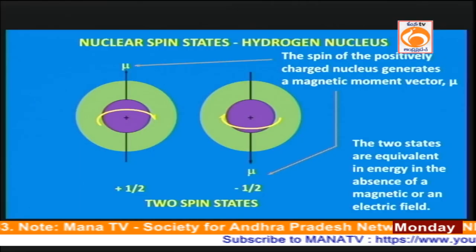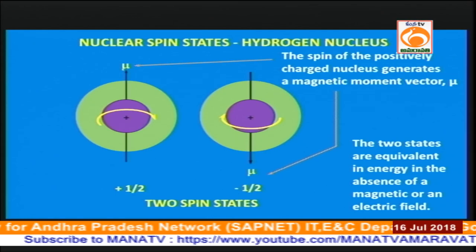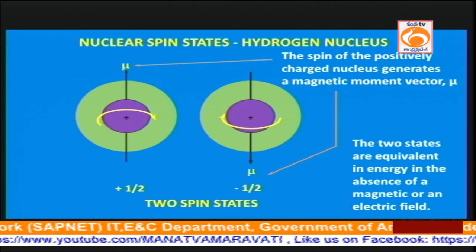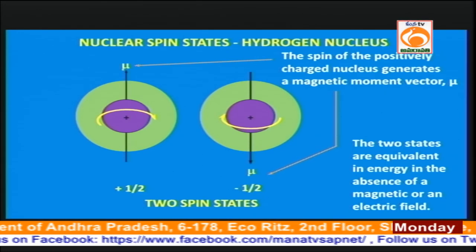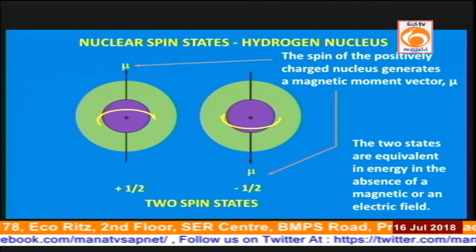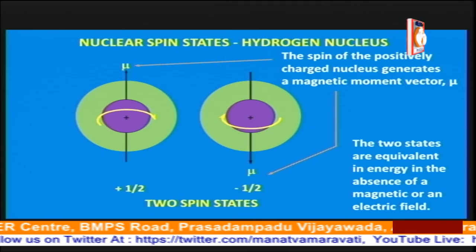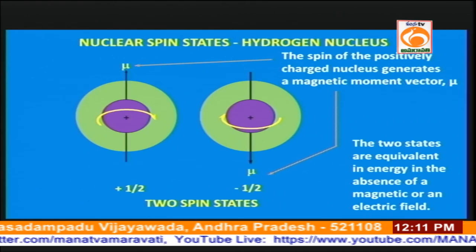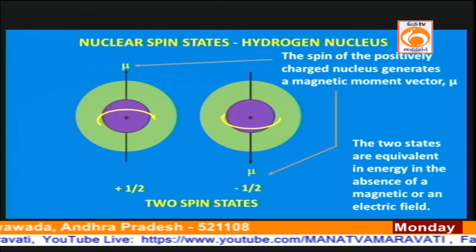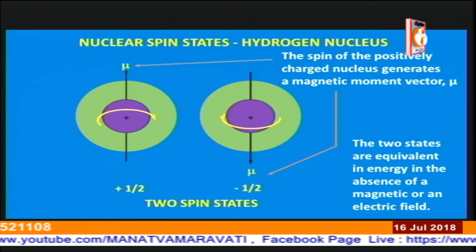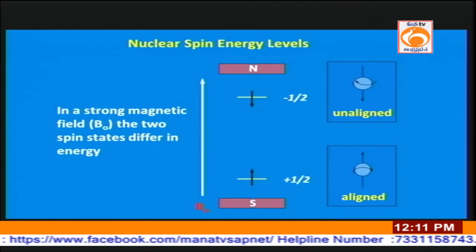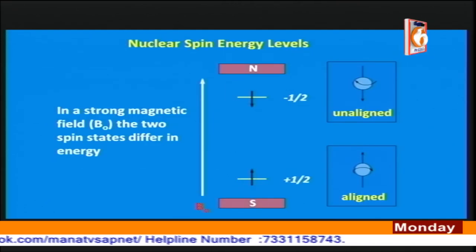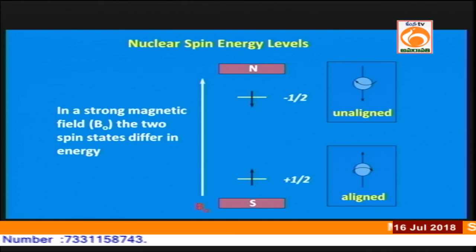In the absence of an external magnetic field, all the protons will be in random orientations. But once we place the sample containing the protons in an external magnetic field, there will be two orientations for the proton. One is called the plus (alpha) orientation and the second is called the minus (beta) orientation. In the alpha orientation the spin of the nucleus orients in the direction of B₀, whereas in the beta orientation it opposes the magnetic field. This splitting takes place only in the presence of B₀.